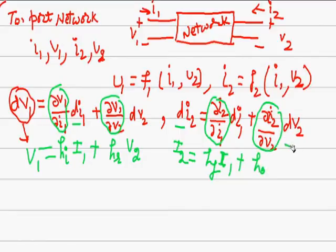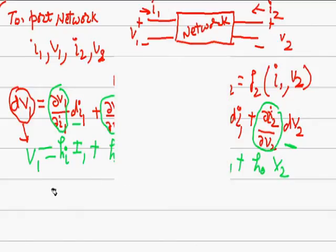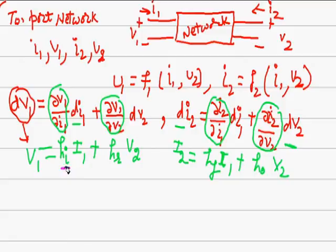Now we are going to define HI. HI is called input impedance. HI is actually a ratio of V1 over I1 when you define V1 over I1, then output is shorted, meaning V2 equals zero. It is called output is shorted.